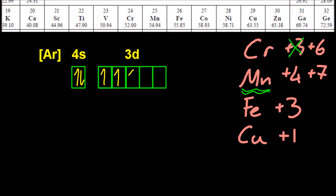Manganese, that's 4S2, 3D5. How do you get plus 4 stable out of that? Don't need to know, don't care, don't worry about it. Plus 7, well that's losing all of those electrons again, leaving empty orbitals.